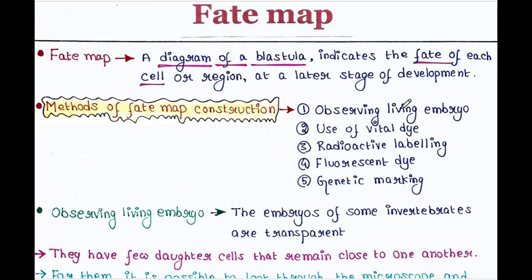The methods are: observing living embryo, use of vital dye, radioactive labeling, fluorescent dye, and genetic marking. We will talk about them one by one.